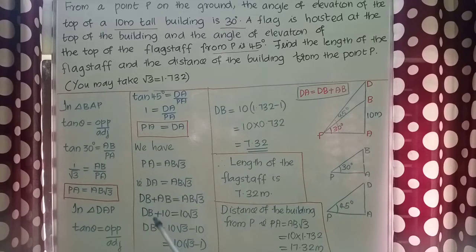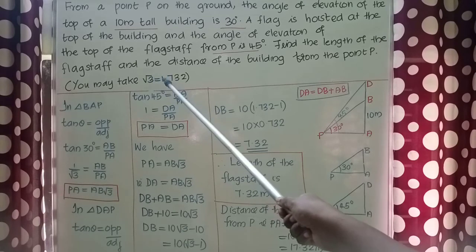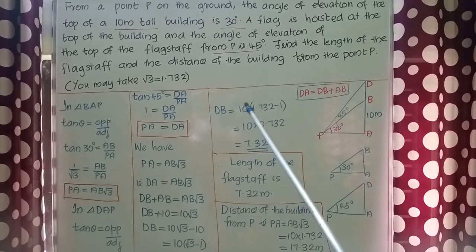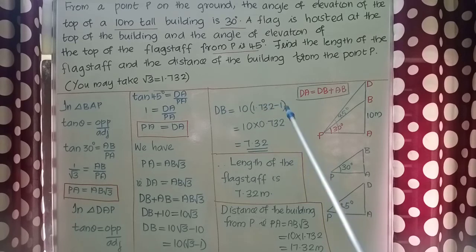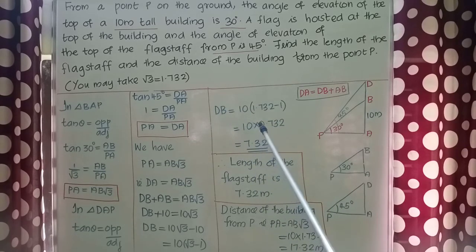So we get DB + AB = AB√3. We know the value of AB is 10, so we get DB + 10 = 10√3. Taking 10 to the right side, we get DB = 10√3 − 10. Here, 10 is common, so we get DB = 10(√3 − 1). Substituting the value of √3 = 1.732, we get DB = 10 × (1.732 − 1) = 10 × 0.732 = 7.32 meters.